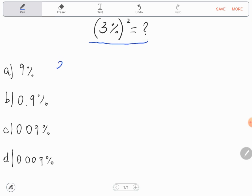3% squared is... okay this symbol here, percent, is the same as divided by 100. In this case 3% is 3 divided by 100 squared.